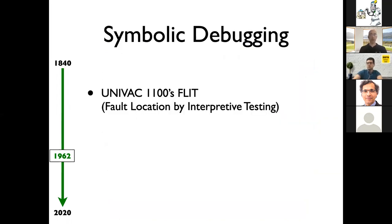Moving to technical debugging work, I'm going to first mention a couple of practical approaches that were used over the years, and then switch to the more research-oriented techniques. The first example of a real debugger was symbolic debugging performed on the UNIVAC 1100, a very old machine, and it was called FLIT, which stands for Fault Location by Interpretive Testing.